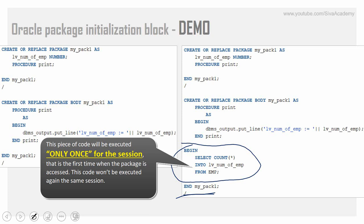That means the moment you access the package, this piece of code will get automatically called and execute whatever code you have written there. After that first call, it will never get called again. We cannot explicitly call this code because it doesn't have any name. But within a session — the moment you connect and access any variable, procedure, or whatever — the first time you access this package, this code will get executed. Now we'll recreate this package with the initialization block and see how it behaves.